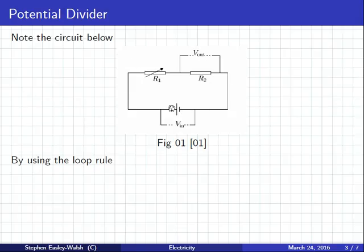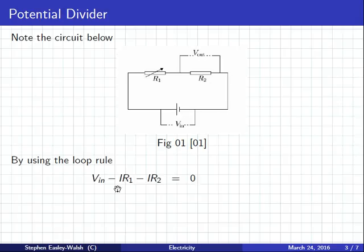What have we got? V in, minus I·R1, minus I·R2, equals zero. Write that one down first to get started.